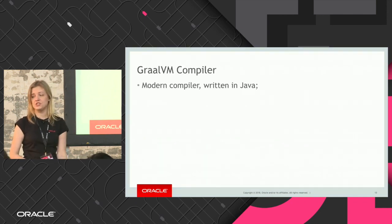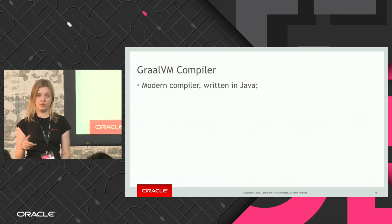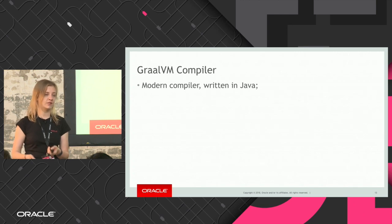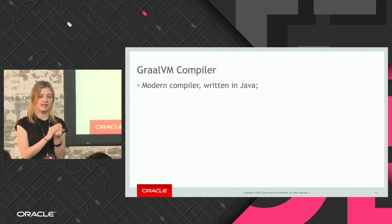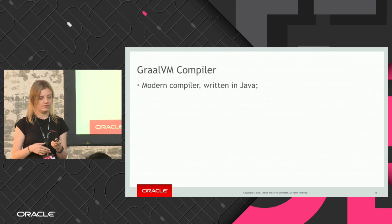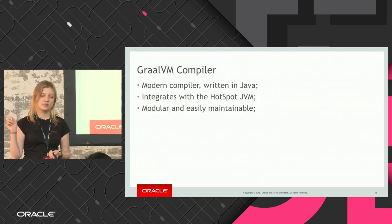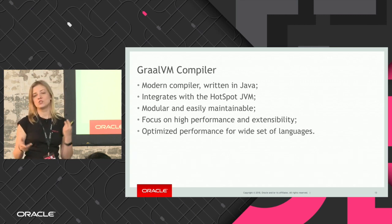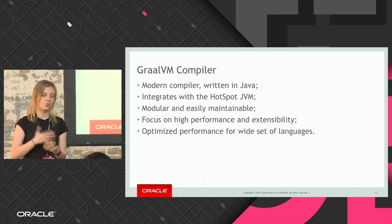Talking about the compiler — often when people talk about Graal, they mean the compiler. Why is it cool? First of all, it's brand new — written from scratch in Java, so you can just go to our GitHub repository and dig inside and understand the way it is written. It integrates with the HotSpot VM through the compiler interface and has high-performance capabilities for a wide set of languages.